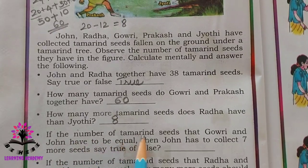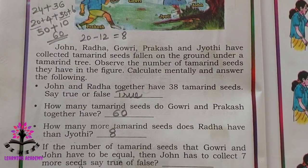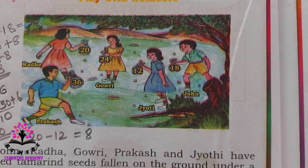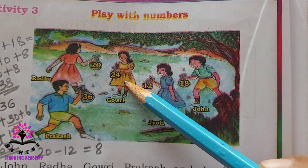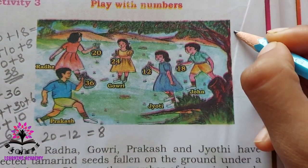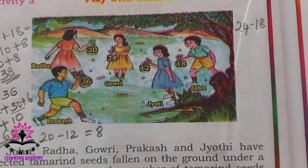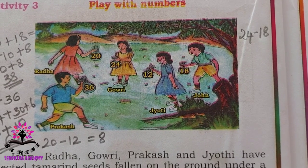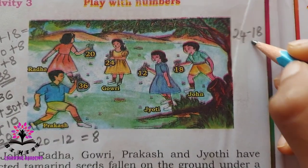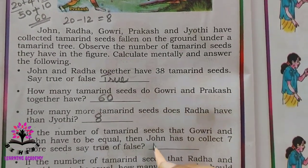Next question: if the number of tamarind seeds that Gauri and John have to be equal, then John has to collect 7 more seeds — say true or false. Gauri has 24 and John has 18, so how many more does John need? It is 24 minus 18, which is 6. But they have given 7, so it is false.